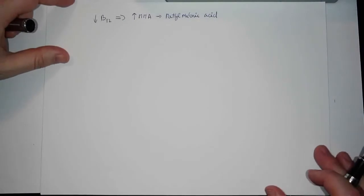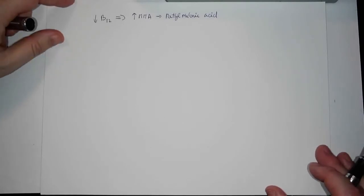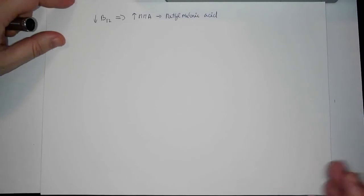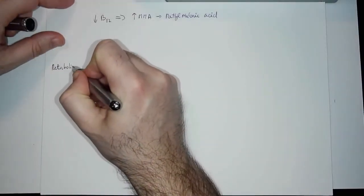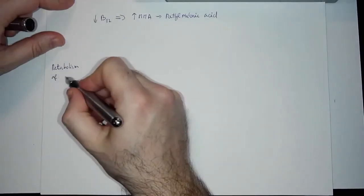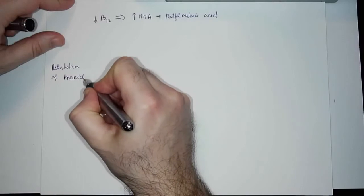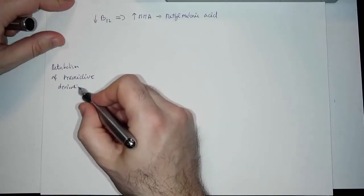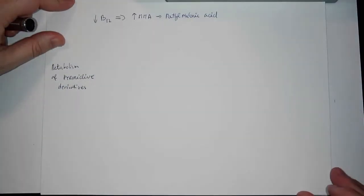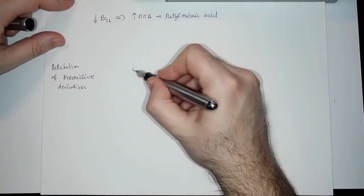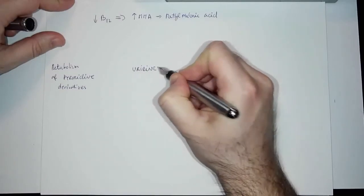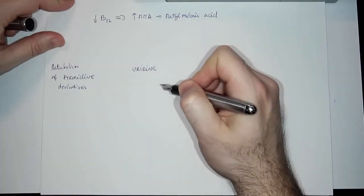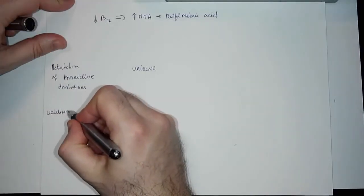There are two things I want to mention. First, I want to stress the importance of B12 in the metabolism of pyrimidine derivatives. B12 has a crucial role in transforming uridine, and uridine is nothing else than uracil with ribose.